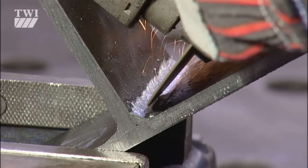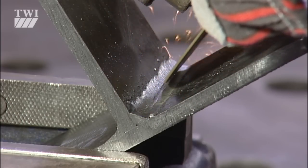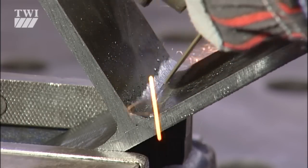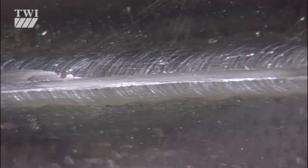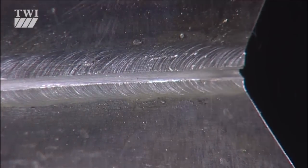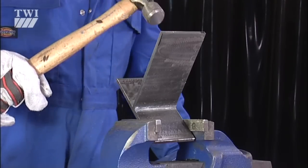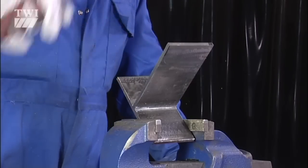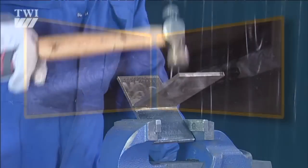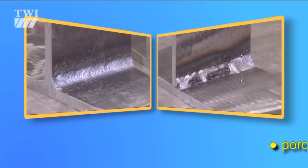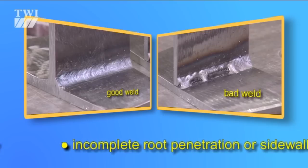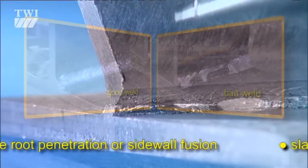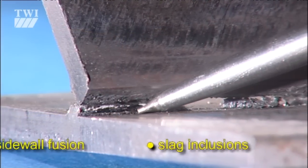The fillet weld is notched with a saw cut along its centre line. Force is then applied to the specimen to bend open the weld using a testing machine, a press, or blows from a hammer. The fractured surfaces can then be examined for internal defects such as porosity, incomplete root penetration or sidewall fusion, and slag inclusions.